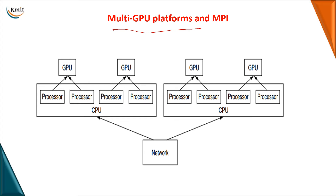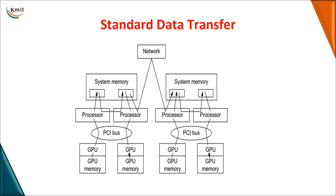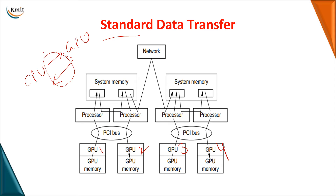Having covered the PCI bus and overhead factors, we move on to the multi-GPU platform. With multiple GPUs available on the network, two GPUs can be connected to one CPU, and you can have CPUs connected to GPUs across different networks. In a standard data transfer scenario — say GPU 1, GPU 2, GPU 3, and GPU 4 — if you want data moved from GPU 1 to GPU 3 on a different network, you need to understand how many transfers are required.